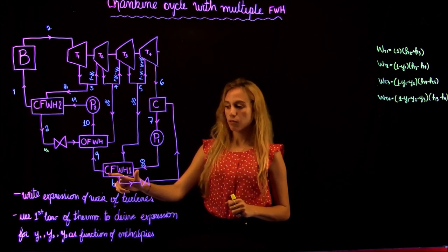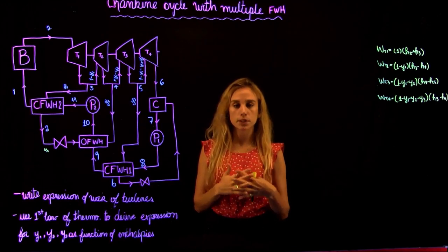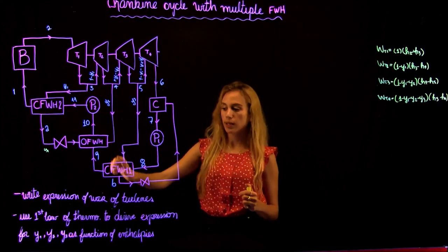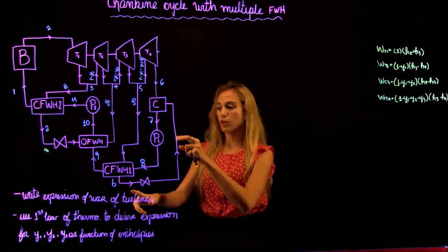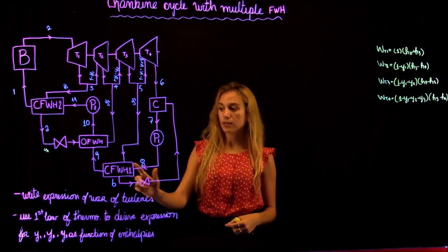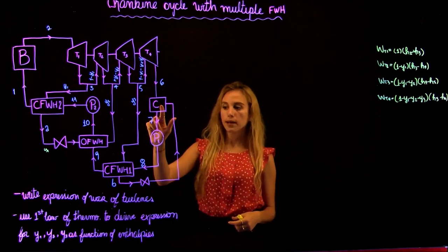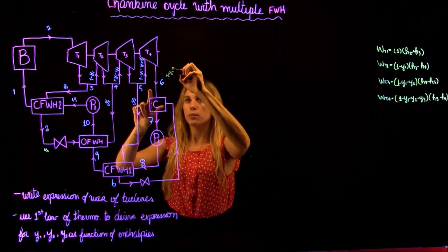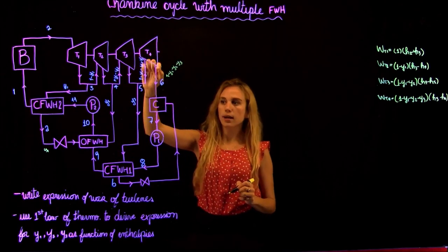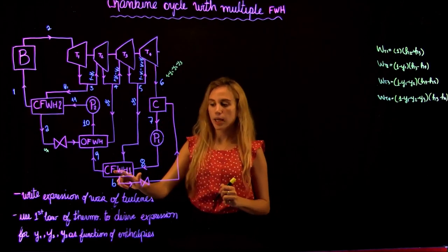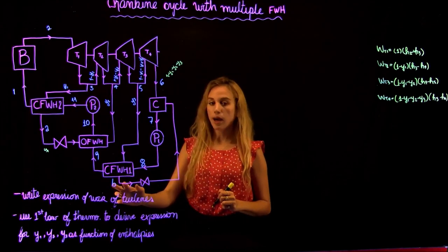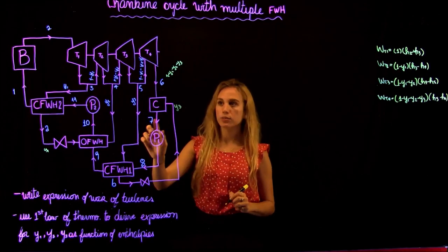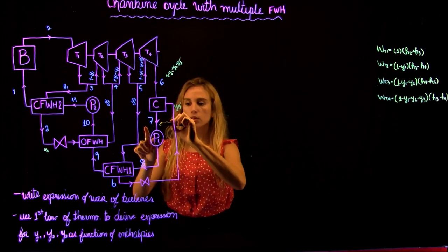Starting at the first cross feed water heater: in a cross feed water heater we don't have any mixture of fluids, so we have a fluid flow coming from state 5 with a mass fraction of Y3 and leaving at B. The energy of the steam is used to heat up the flow from 8 to 9. The mass fraction at 8 comes from the condenser: after the last expansion we have 1 minus Y1 minus Y2 minus Y3 going into the condenser, plus Y3 coming back from point B. So the Y3 terms cancel, giving 1 minus Y1 minus Y2 coming out at 7, which is the same mass fraction through to state 8.